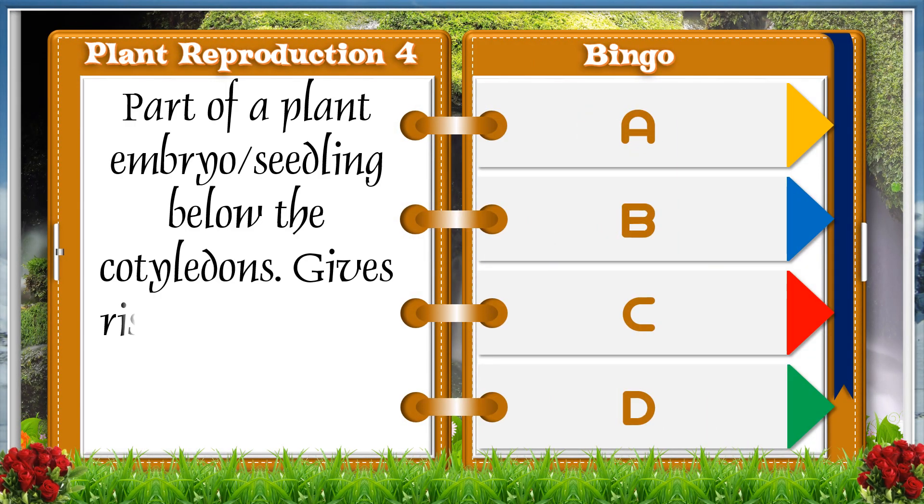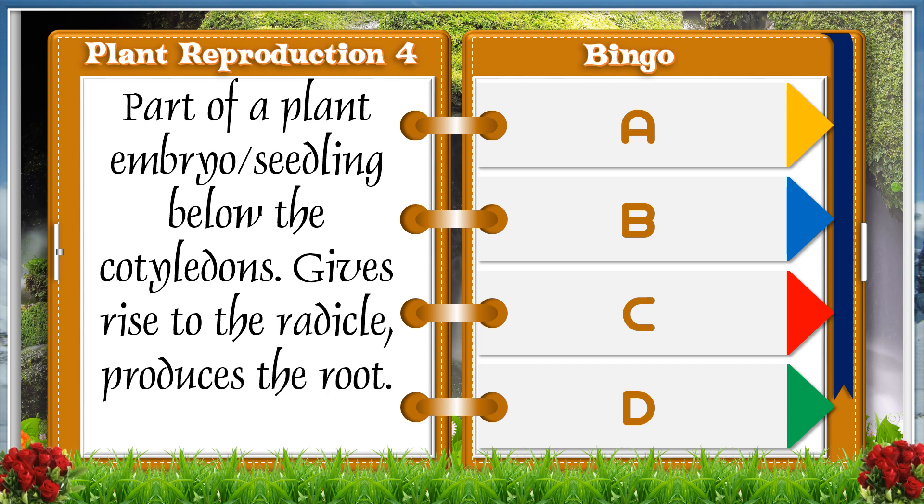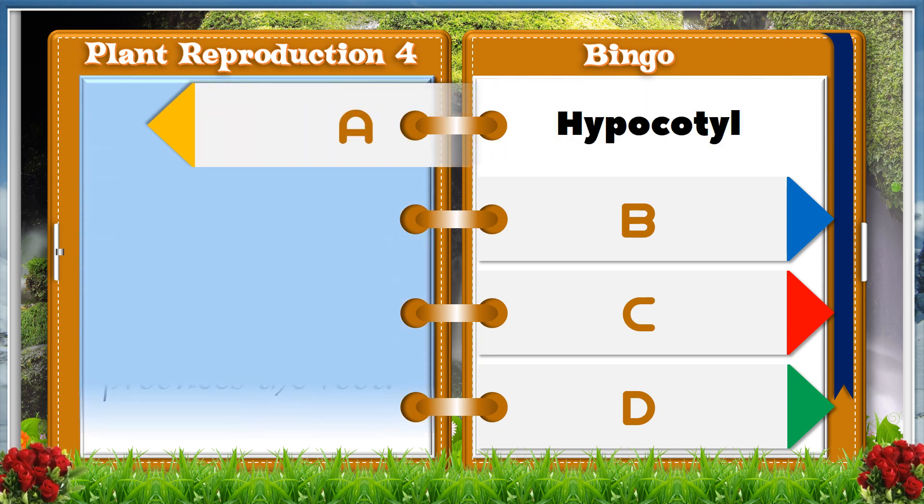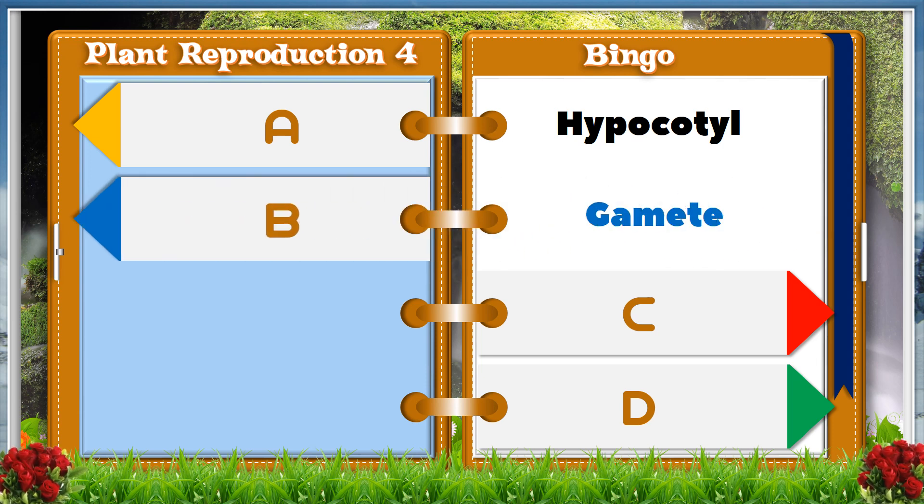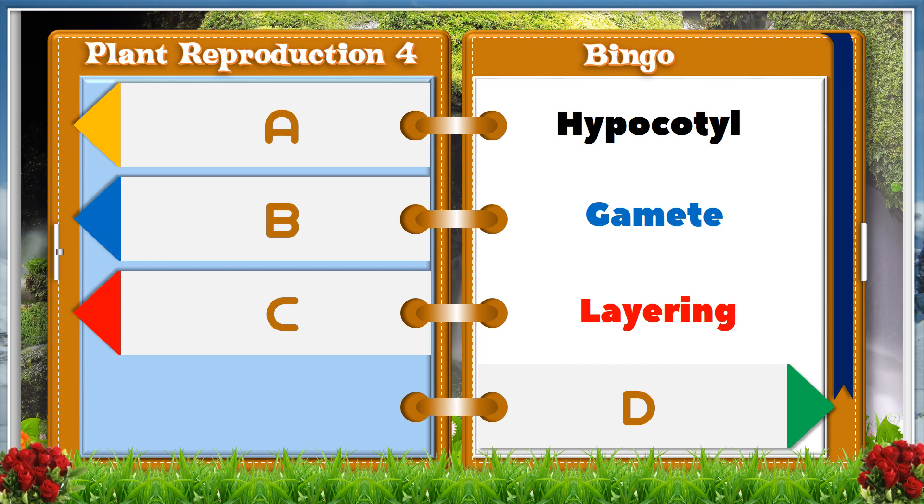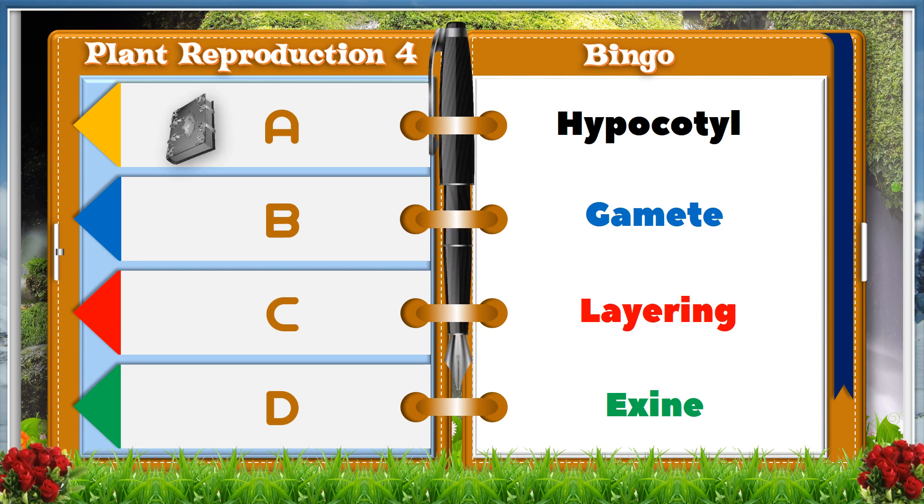Part of a plant embryo or seedling below the cotyledon, gives rise to the radicle, produces the roots. A. Hypocotyl. B. Gamete. C. Layering. D. Exine. And the answer is A, Hypocotyl.